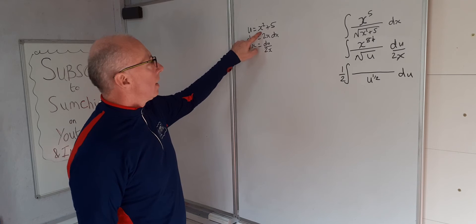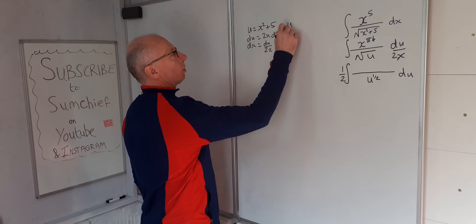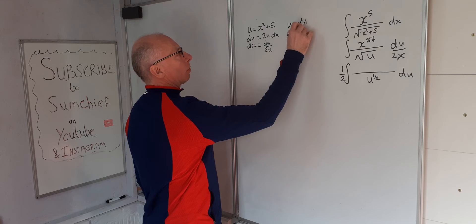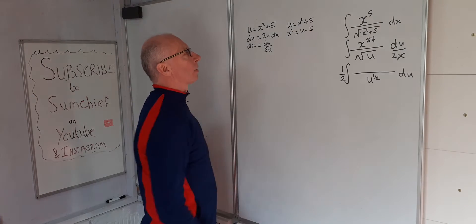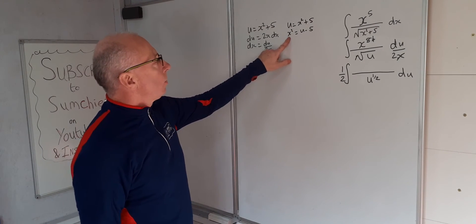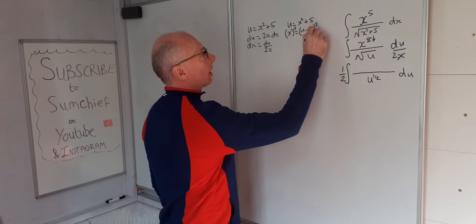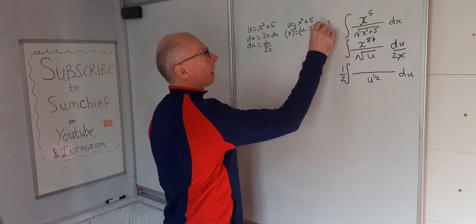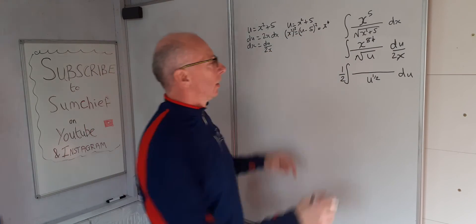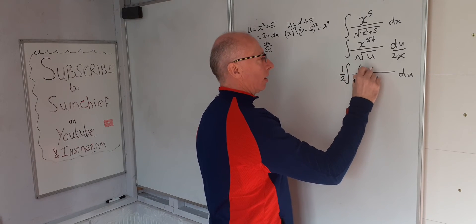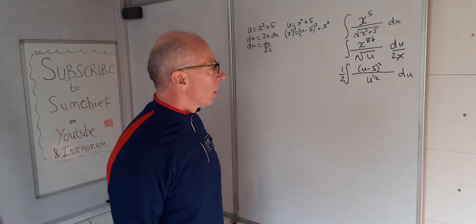Since u equals x squared plus 5, we can say x squared equals u minus 5. Squaring both sides gives x to the 4 equals (u minus 5) squared, which is exactly what we're looking for. Substituting (u minus 5) squared in for x to the 4 means we're now fully in the u world and have a proper integral to work with.